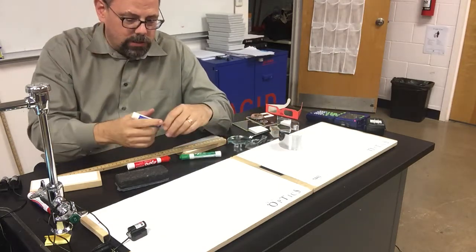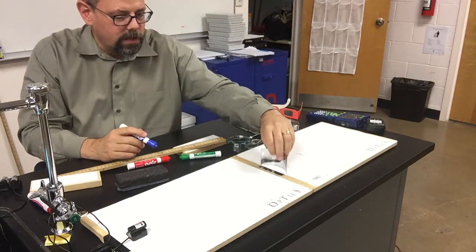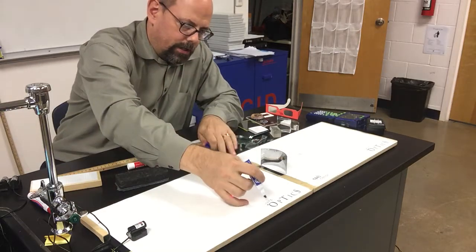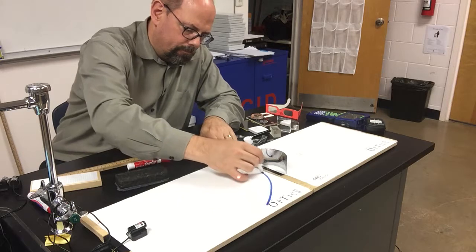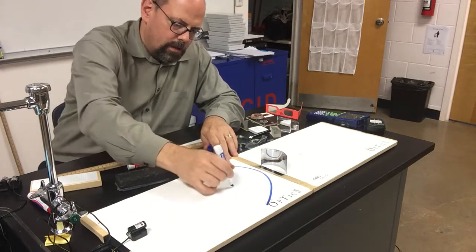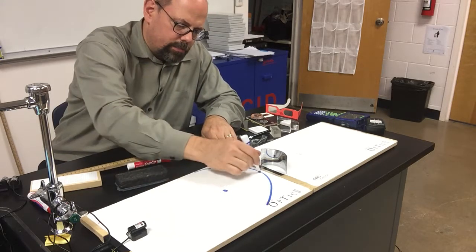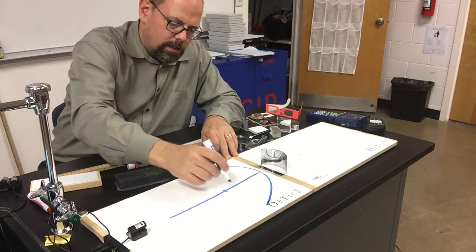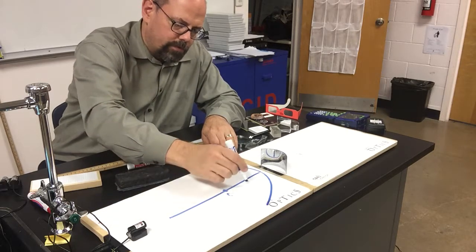I'm going to draw one last one, and I'll use the inside part of this curve like this. I'm going to draw that mirror in here. Here's the center of that circle. Here's the principal axis. This is the center. Here's the focus.